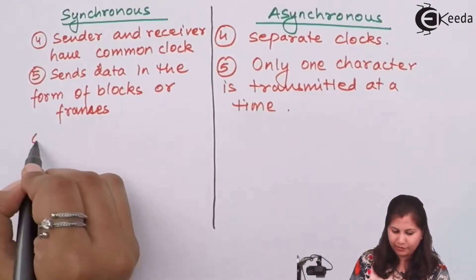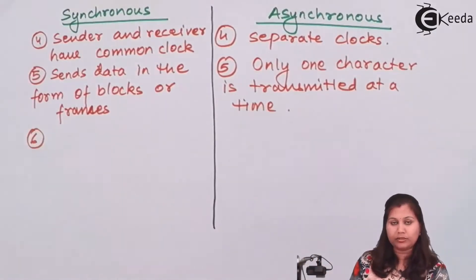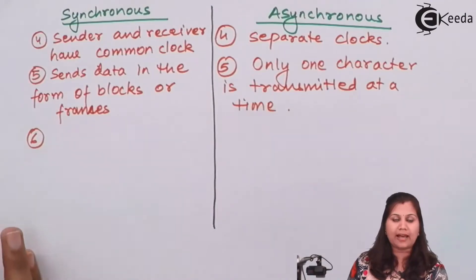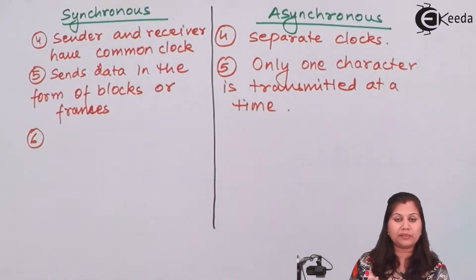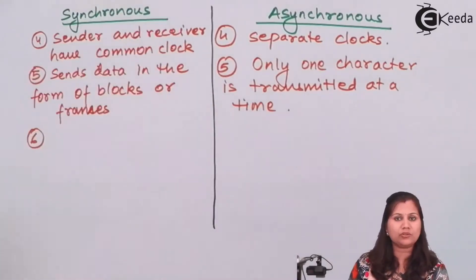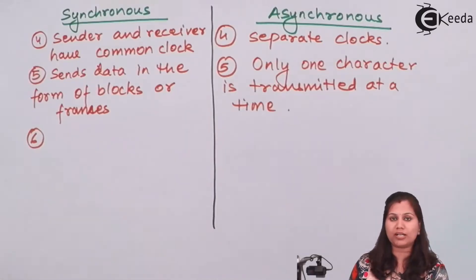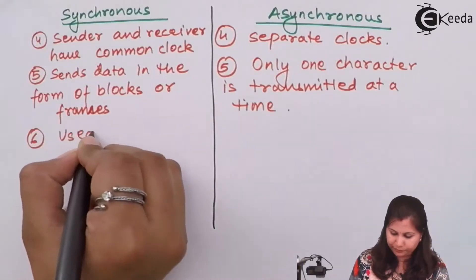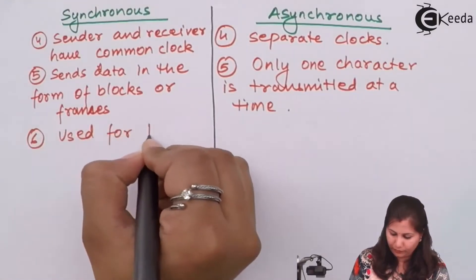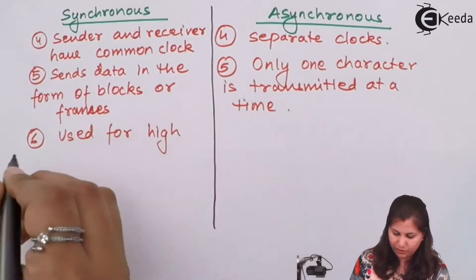The next difference is that the synchronous method has a very high speed of transmission. It is used in cases where faster transmission is required. Asynchronous, on the other hand, has a very slow speed of transmission. So synchronous is used for high speed transmission.